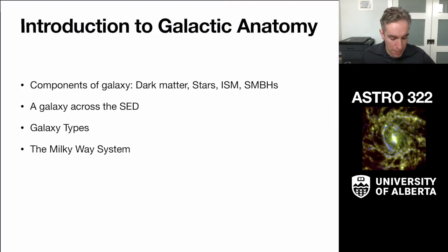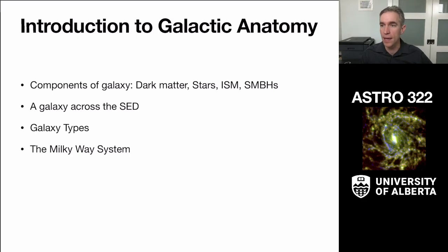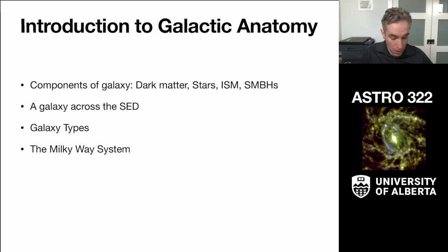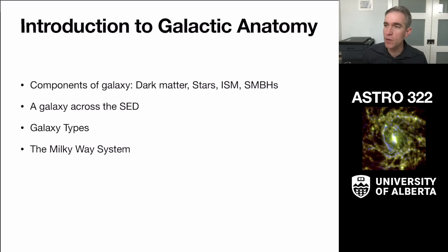So that's going to happen in a few parts. I'm going to give you a brief overview of the main parts of a galaxy: dark matter, stars, the interstellar medium, and supermassive black holes. Then we'll go on a tour across the spectral energy distribution and look at the different types of light we see from a galaxy. We'll do a brief review of different galaxy types, and finally close out with a few notes about the unique factors of being stuck inside the Milky Way.